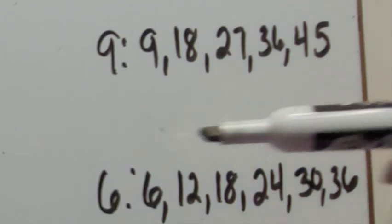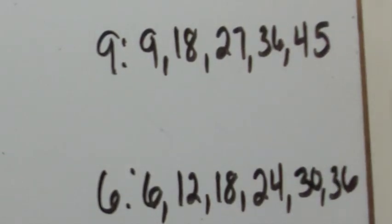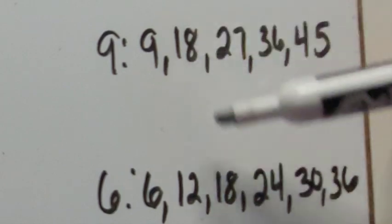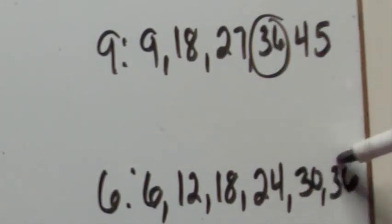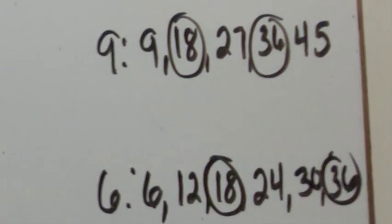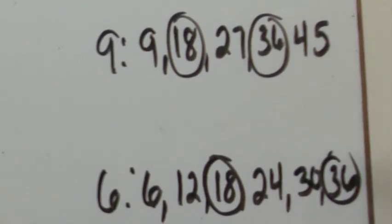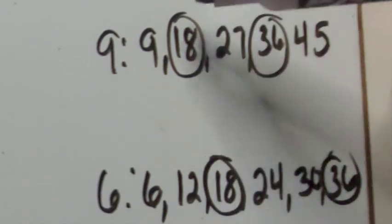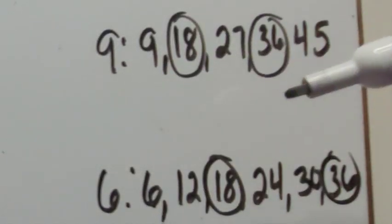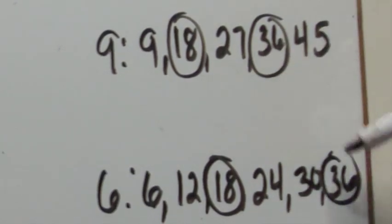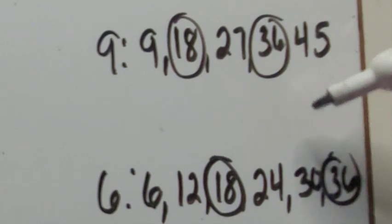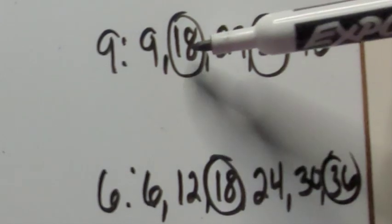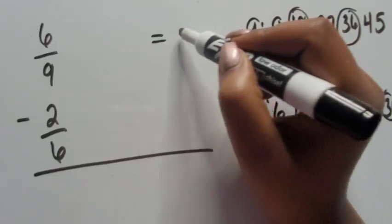I did six multiples of six and five multiples of nine — we could have kept going, of course. We see that they have thirty-six in common, but they also have eighteen in common. This is where choice comes in. Whatever number a student is more comfortable with, they can use that multiple as their common denominator. I always encourage students to try and go with the lowest common multiple, but it is not mandatory. If you have a higher multiple, you can simplify later if necessary. For this example, we're going to use eighteen as the common denominator.